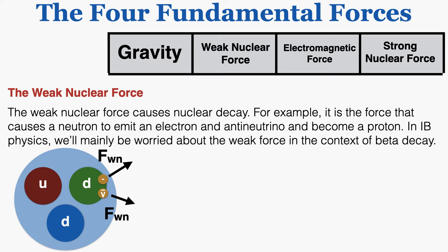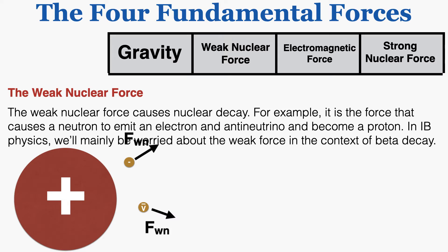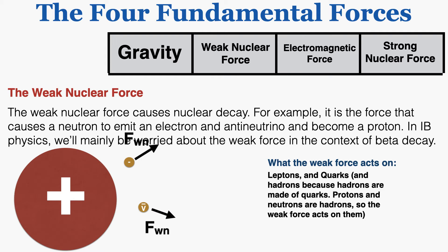The weak nuclear force also causes an anti-neutrino to be emitted. Because these particles interact with the quark, the quark experiences a weak nuclear force in the opposite direction due to Newton's third law. The particles are expelled and the down quark becomes an up quark. When you have two up quarks and one down quark, the particle becomes a proton instead of a neutron — that's beta decay, driven by the weak nuclear force. The weak force acts on leptons and quarks, and on hadrons because hadrons are made of quarks. Protons and neutrons are hadrons, so the weak force acts on them too.